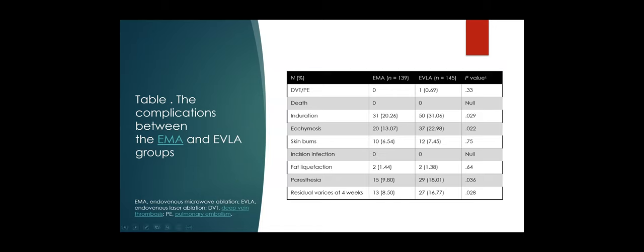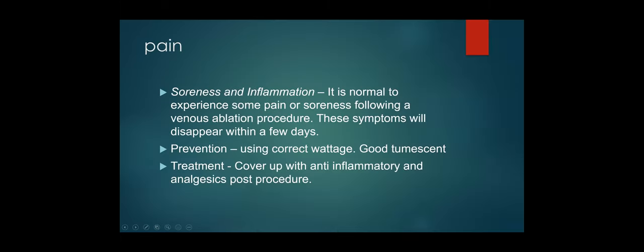Coming to one of the complications: pain. When we are ablating the vein, the vein will get inflamed and cause soreness and pain in the first few days. Unless we treat them with analgesics and anti-inflammatory drugs, this pain might continue. So it's better that we cover the patient with anti-inflammatory and analgesics post-procedure. Prevention: as Dr. Mark Wickley and Dr. Tang have told us, if you keep the wattage correct — 40 watts for five to seven seconds — then prevention of pain is very much possible, and good tumescent around the vein can prevent this pain.